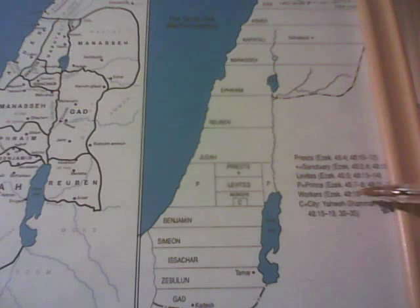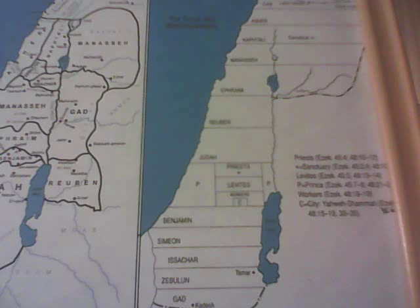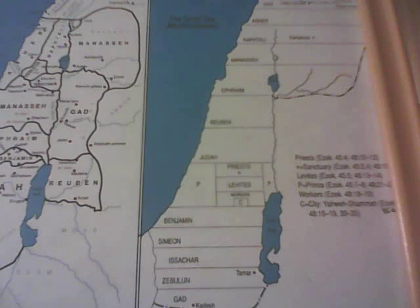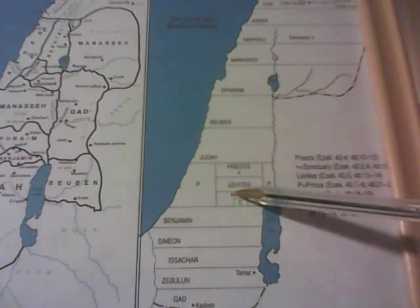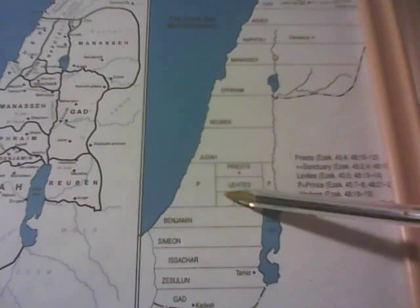Now let's go to the workers — Ezekiel 48:18-19: 'The rest of the land alongside the district of the holy section shall be 10,000 cubits to the east and 10,000 to the west. It shall be adjacent to the district of the holy section, and its produce shall be food for the workers of the city.' Verse 19: The workers of the city from all the tribes shall cultivate it, and it shall be for food for the workers of the city. Apparently this will be a green, lush area right in here providing food for this whole general area.